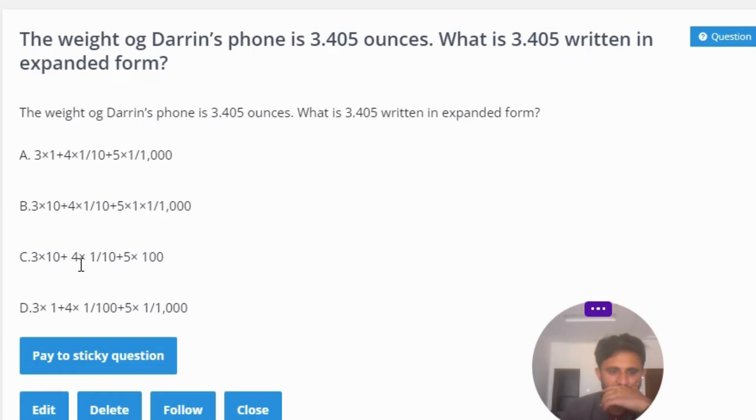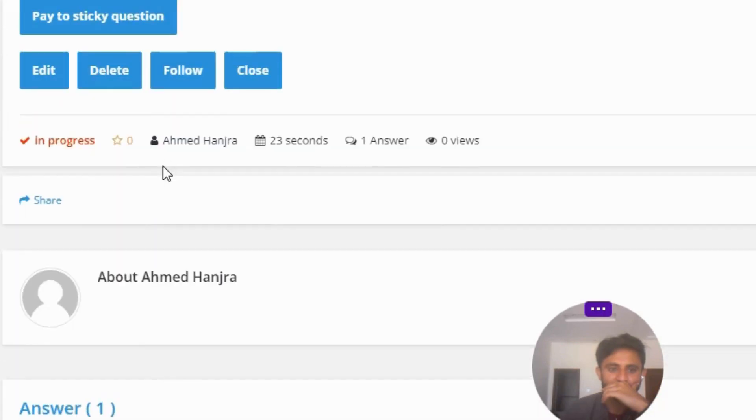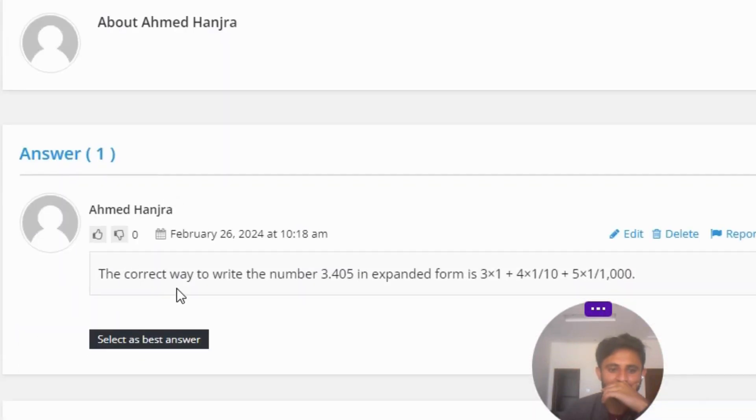Option C: 3 multiply 10 plus 4 multiply 1 divide 10 plus 5 multiply 100. Option D: 3 multiply 1 plus 4 multiply 1 divide 100 plus 5 multiply 1 divide 1,000. The correct way to write the number 3.405 in expanded form is 3